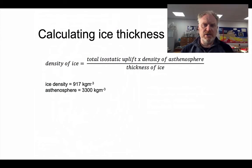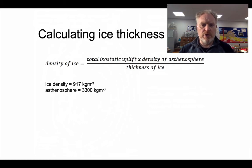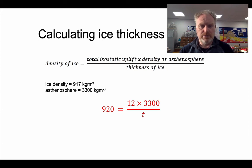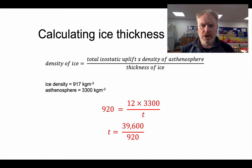I then asked you to work out the ice thickness that could have caused that uplift. If we put these figures into our equation, the density of ice is 920, rounded to two significant figures. The isostatic uplift is 12 metres. The density of the asthenosphere is 3,300 kilograms per cubic metre. Notice all the units are the same — kilograms and metres. We rearrange the equation to make the thickness of the ice the subject, and the answer is a surprising 43 metres. We'd expect that to be a lot more, so we need to think about why that is.